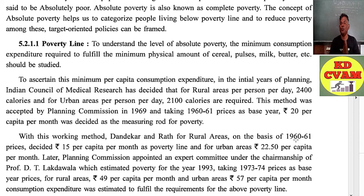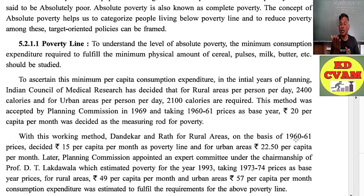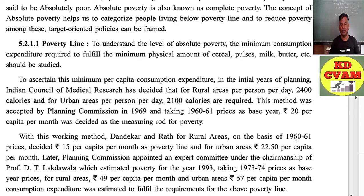First, we consider food. Food doesn't simply mean eating something — it means eating nutritious food with sufficient calories, including cereals, pulses, milk, butter, etc. To ascertain the minimum per capita consumption expenditure in the initial years of planning, the Indian Council of Medical Research (ICMR) decided that for rural areas, the requirement is 2,400 calories per person per day, and for urban areas a different standard based on work style and lifestyle.